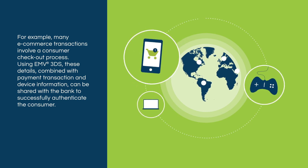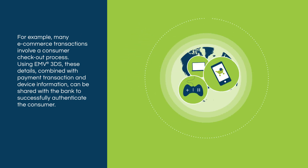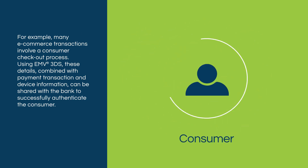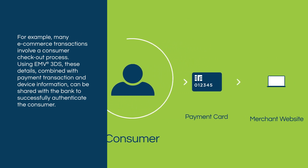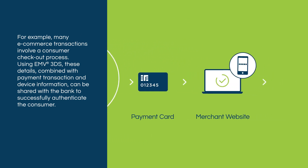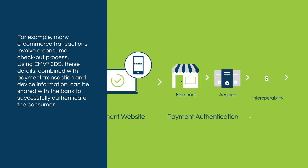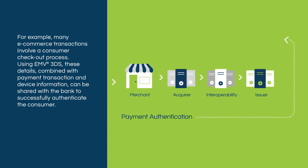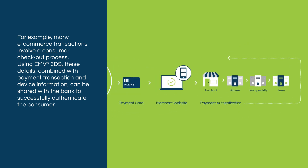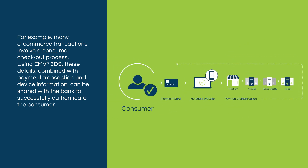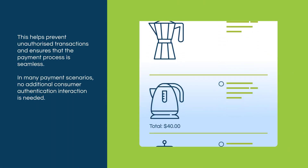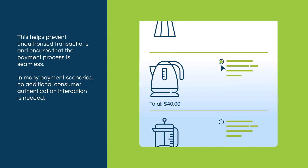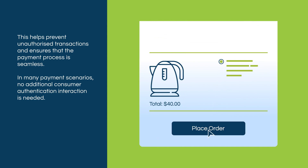For example, many e-commerce transactions involve a consumer checkout process. Using EMV3DS, these details, combined with payment transaction and device information, can be shared with the bank to successfully authenticate the consumer. This helps prevent unauthorized transactions and ensures that the payment process is seamless.